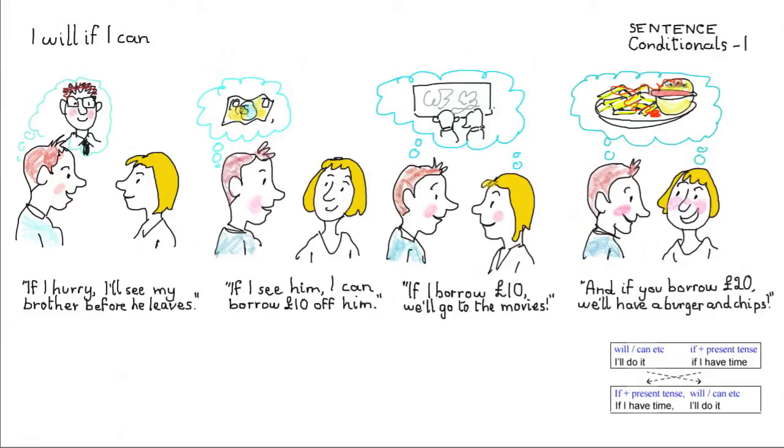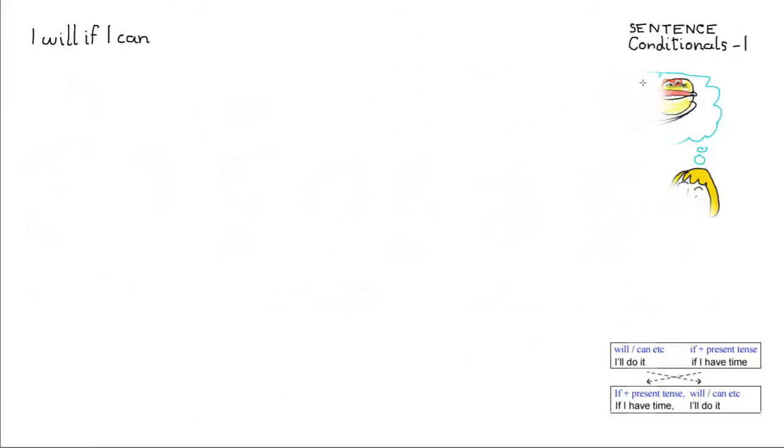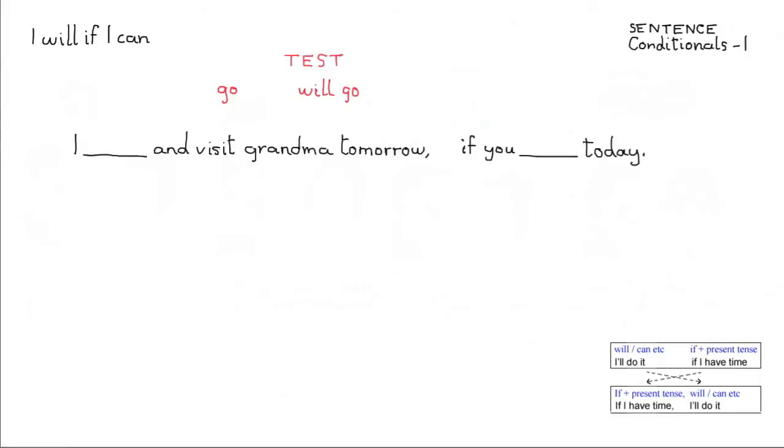Now I'd like to have a little test, so I'll just rub all this out, get my rubber going, there we go, and I'll put test up the top here, and I'm going to write a sentence with two options, so go and will go are the two options, and here's the first sentence, I and visit grandma tomorrow, if you today.